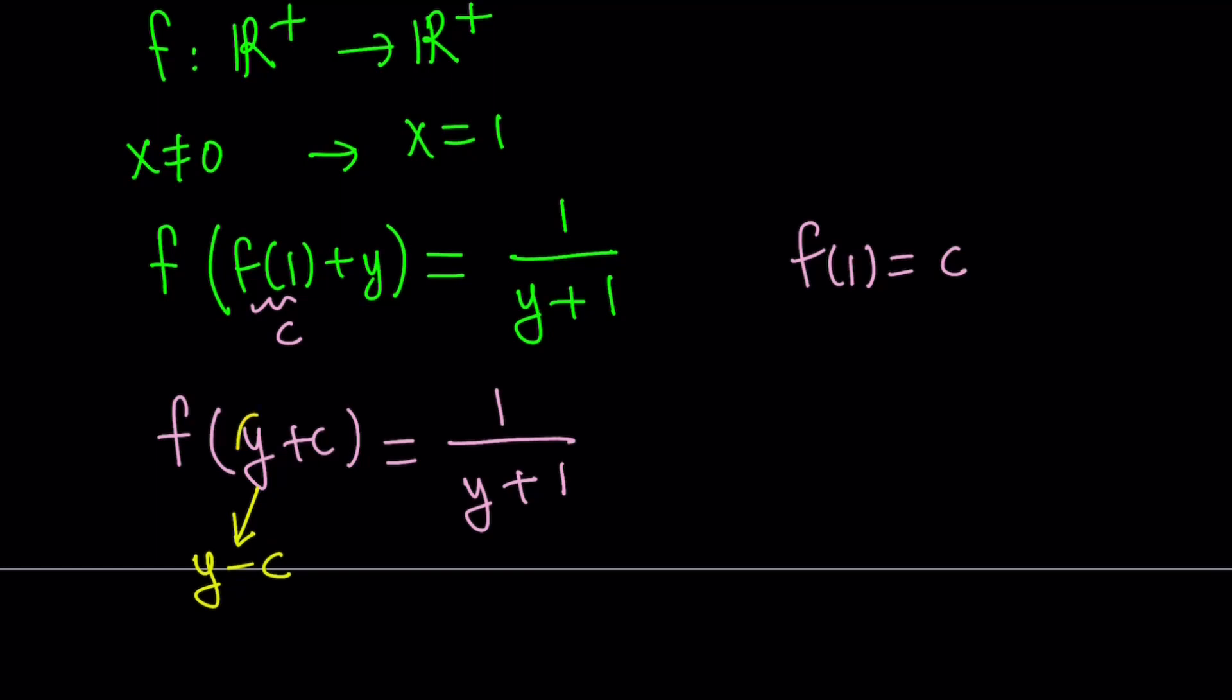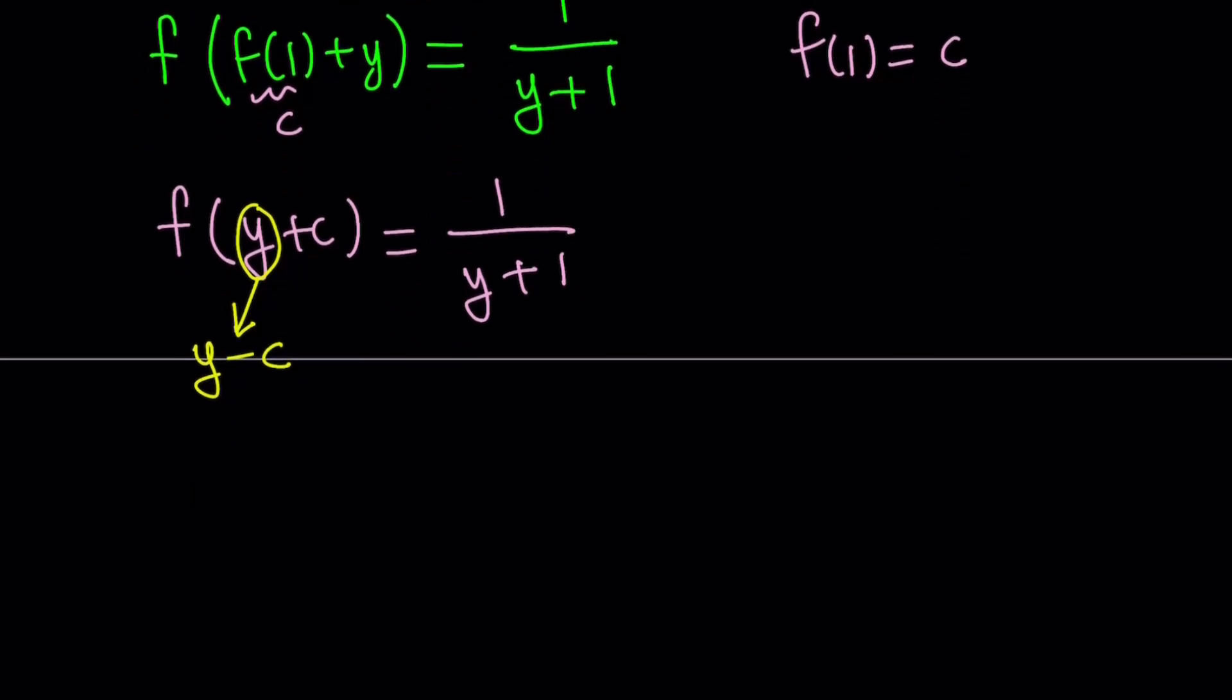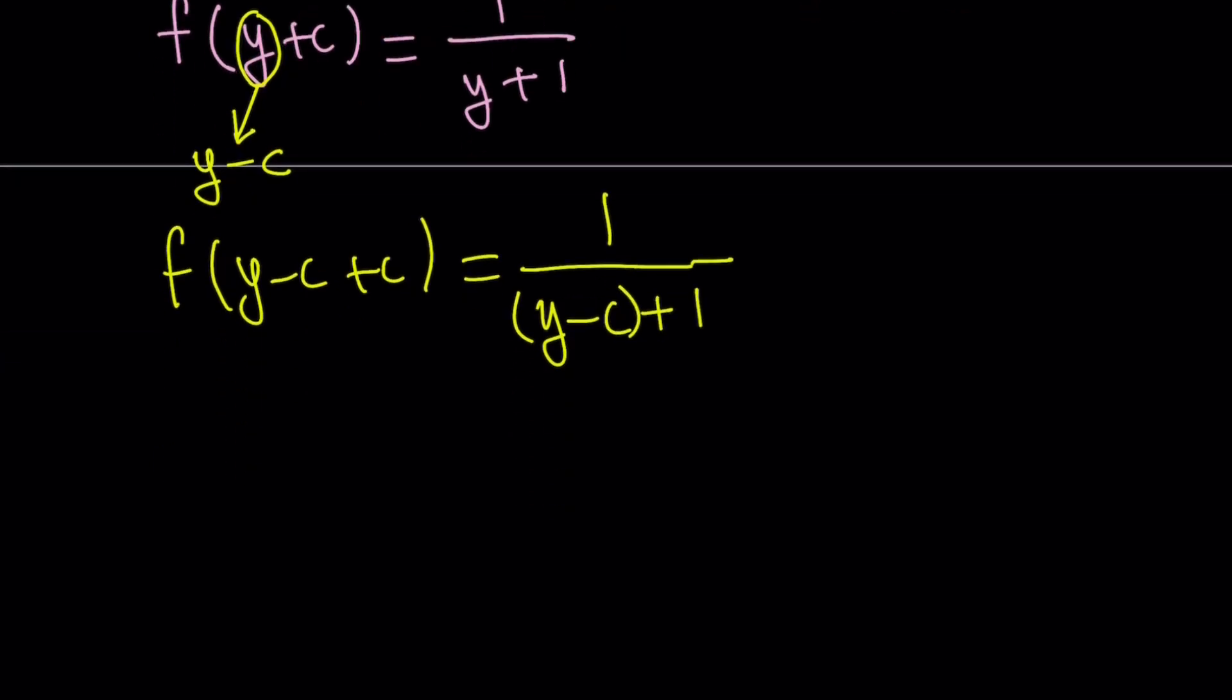But can I replace y with y minus c? Of course, you can. Because these are dummy variables. They're just dummy. We can replace any variable with another variable, and so forth. As long as we're not violating the conditions, right? So if you replace y with y minus c, we get f of y minus c plus c. And on the right-hand side, we get 1 over y minus c. Remember, y is being replaced with y minus c plus 1. The c cancels out and we end up with f of y equals 1 over y minus c plus 1. I'm going to write that as y plus 1 minus c.